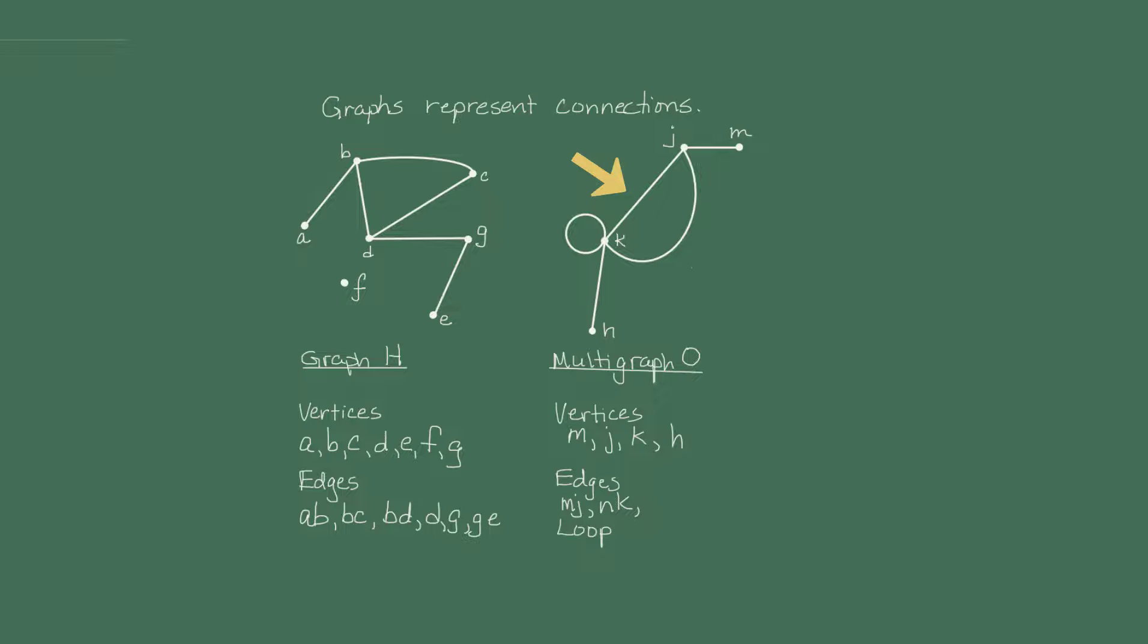We have two edges that we will label as JK. This makes it a little tricky with multigraphs because with a multigraph, you really need to label the edges with a separate label so you can distinguish between the edges that connect the same two vertices.